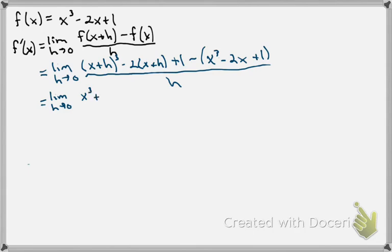out is x cubed plus 3x squared h plus 3x h squared and then plus h cubed. So that whole line is the x plus h to the quantity cubed.